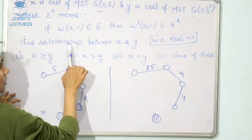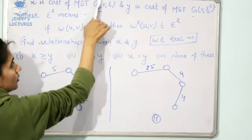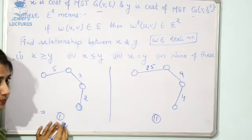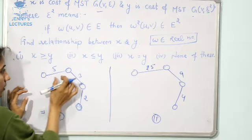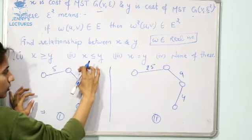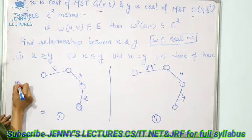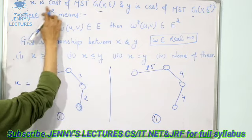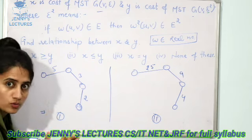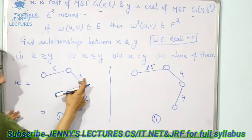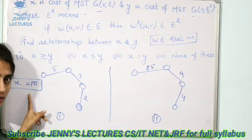Now, you have to find out relationship between X and Y. What is X and Y? X is cost of MST - this one is our first MST. And how to calculate cost of MST? Just total the weight or the cost of these edges. What is the cost of MST or X? Simply you have to do their sum. That would be the cost of MST. 5 plus 3 = 8 plus 2 = 10. X is 10.